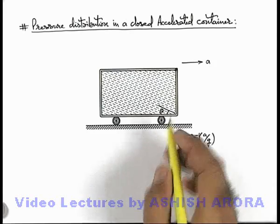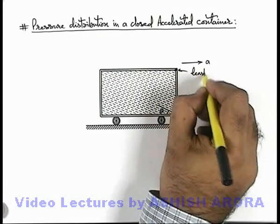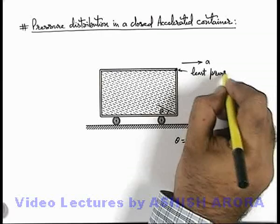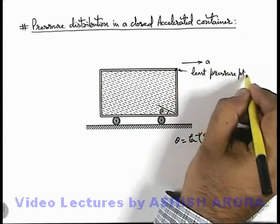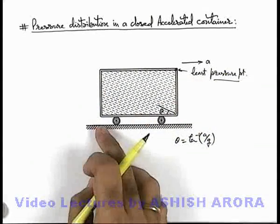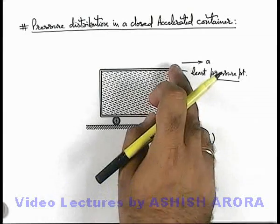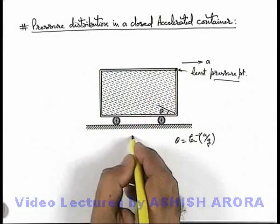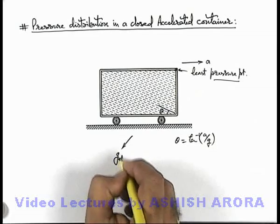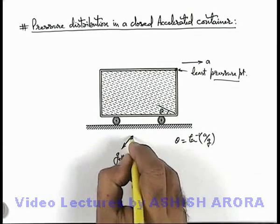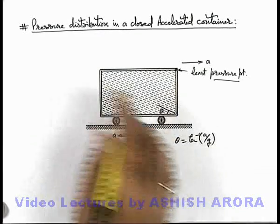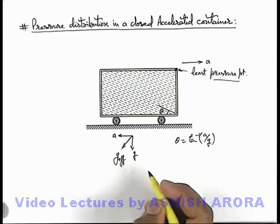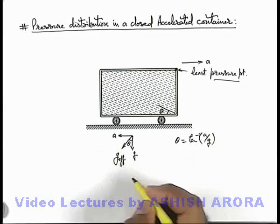In this situation we can say this is the least pressure point in the fluid body which is enclosed in the container, because from this point only pressure will start increasing as g effective is acting in this direction because of the resultant effect of pseudo acceleration and the gravity g, and this angle is same as theta.